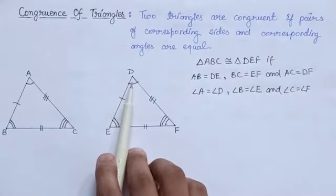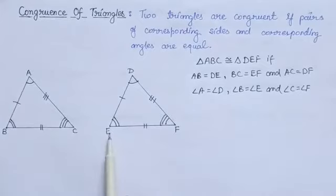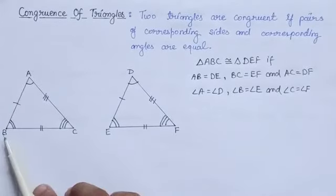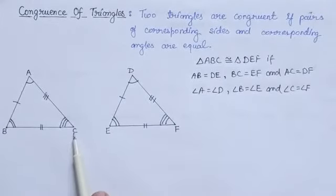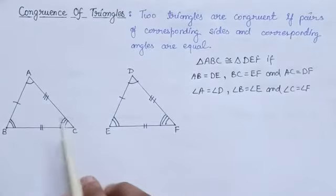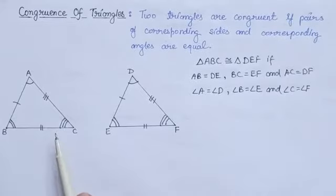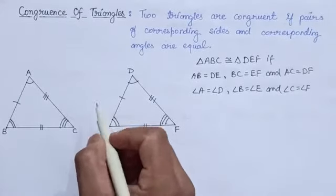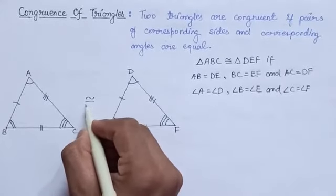Also, vertex D matches with A, E matches with B, and F matches with C. Then these two triangles cover each other exactly. This is the meaning of congruency of two triangles.